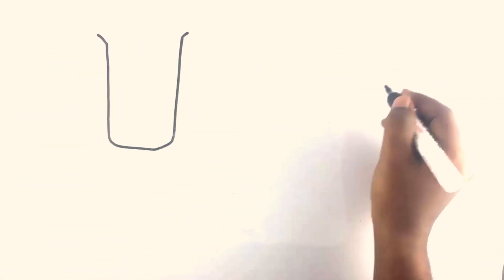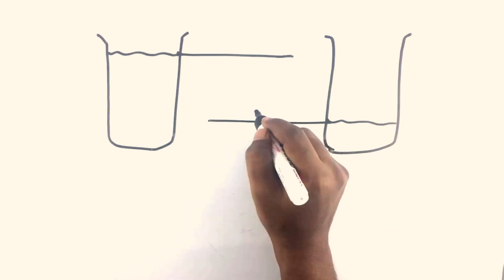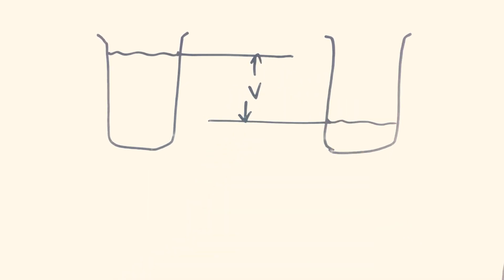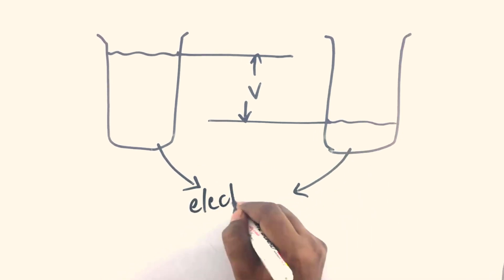To understand this we will take a look at this analogy. Here we have two tanks with one containing more water than the other. This difference in height of the surface of the water of the two tanks can be seen as voltage, and the water molecules can be seen as electrons.